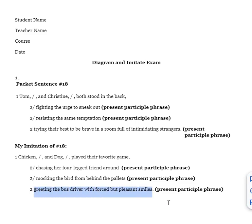This one is Chicken chasing her four-legged friend around, comma slash comma. This free modifier modifies Dog, slash comma, mocking the bird from behind the pallets. They're both present participle phrases, so the identification of the phrase here in parentheses I'm just keeping because that's what I needed to create here as well.